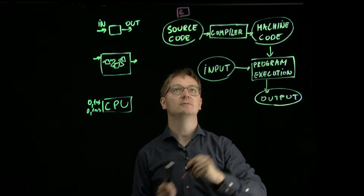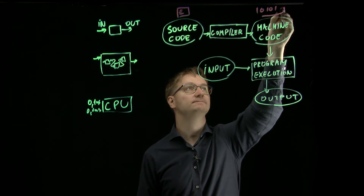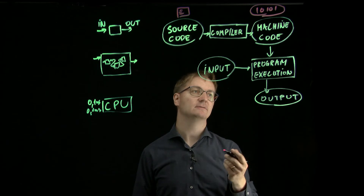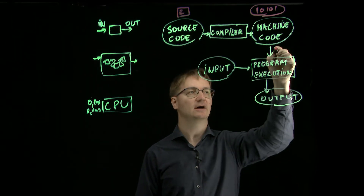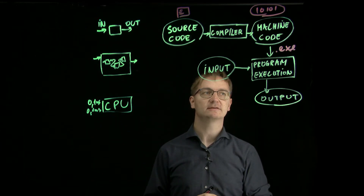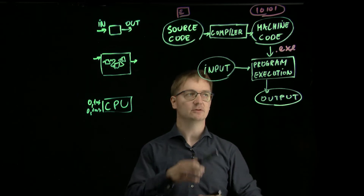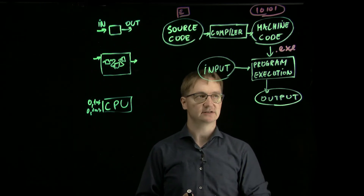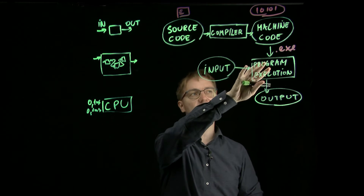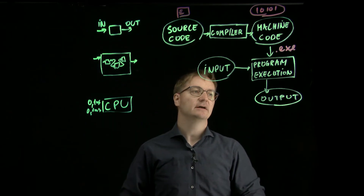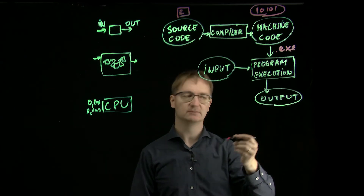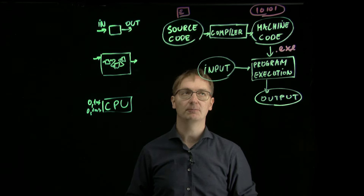The machine code is something where you have zeros and ones. In Windows you can have an executable file, and in Linux and Mac you also have executables you can run. The compilation is done once — you write your code, compile it, and now it's in machine code and you can execute it multiple times. During program execution, input can be read from the user and output can be generated.